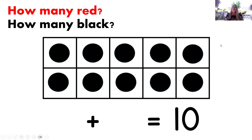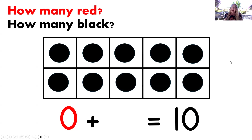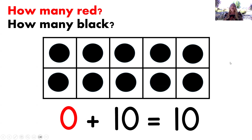How many of the dots are red? That was easy — there are zero red dots. And how many dots are black? That's right, 10. Now we can read the addition equation: zero plus 10 equals 10. Nice job. Thanks for reading that with me. Let's try another one.